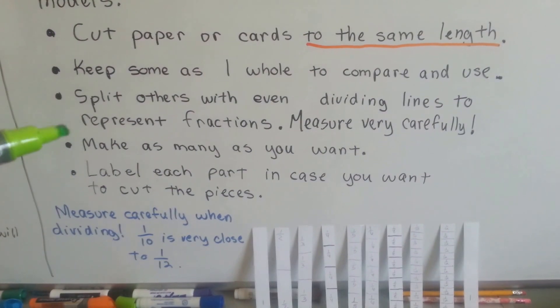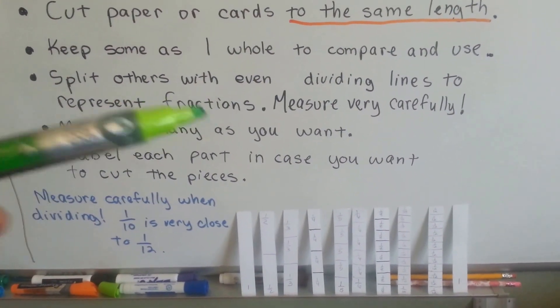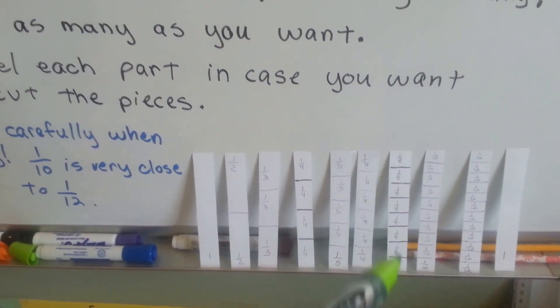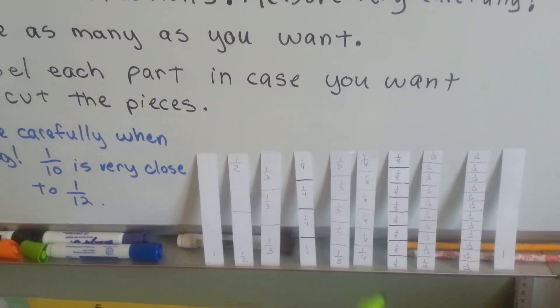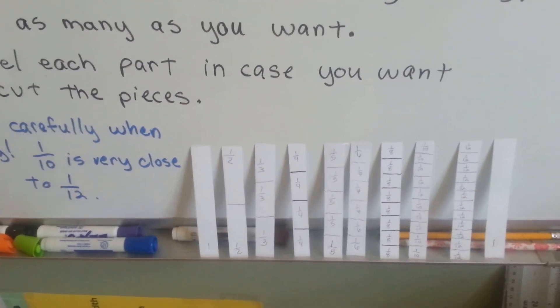Then, you split others with even dividing lines to represent the fractions and measure very carefully, and make as many as you want. Then label each part. That way, in case you want to cut the pieces to add them, you'll know what size they are.